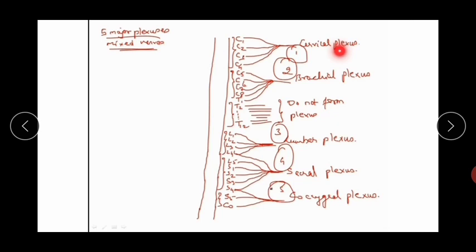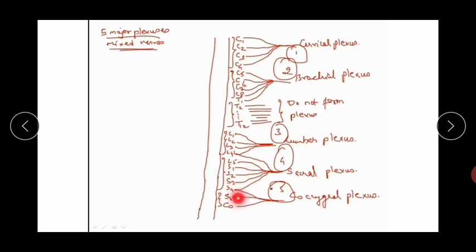There are five nerve plexuses in the body. First is the cervical plexus formed by C1, C2, C3, and C4. Next is the brachial plexus formed by C5, C6, C7, C8, and T1. Then the lumbar plexus, sacral plexus formed by L4 to S4, and the coccygeal plexus formed by S4, S5, and Co.